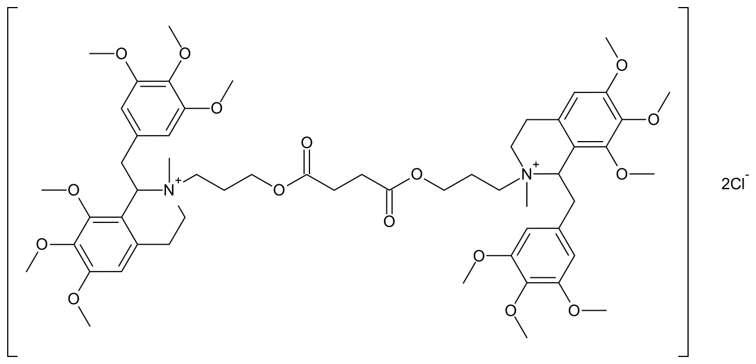Doxacurium represents the second generation of tetrahydroisoquinolinium neuromuscular blocking drugs in a long lineage of nicotinic acetylcholine receptor antagonists synthesized by Mary M. Jackson and James C. Wisowaty, Ph.D., both chemists within the chemical development laboratories at Burroughs Wellcome Co., Research Triangle Park, North Carolina, in collaboration with John J. Savarese, M.D., who at the time was an anesthesiologist in the Department of Anesthesia, Harvard Medical School at the Massachusetts General Hospital, Boston, Massachusetts.